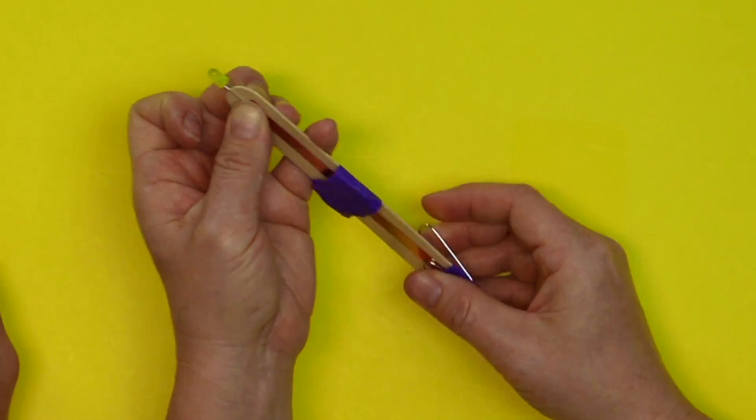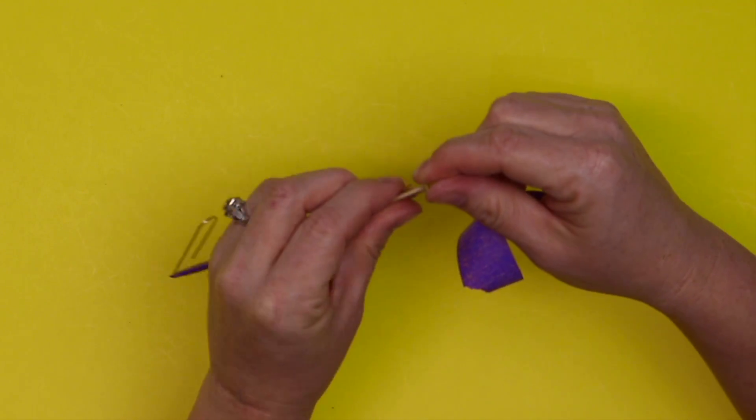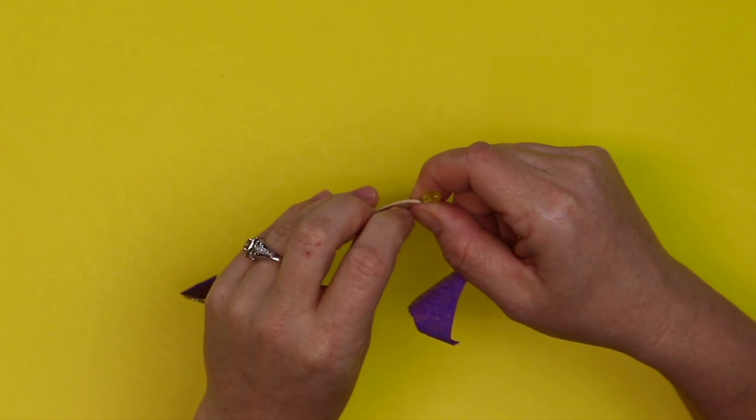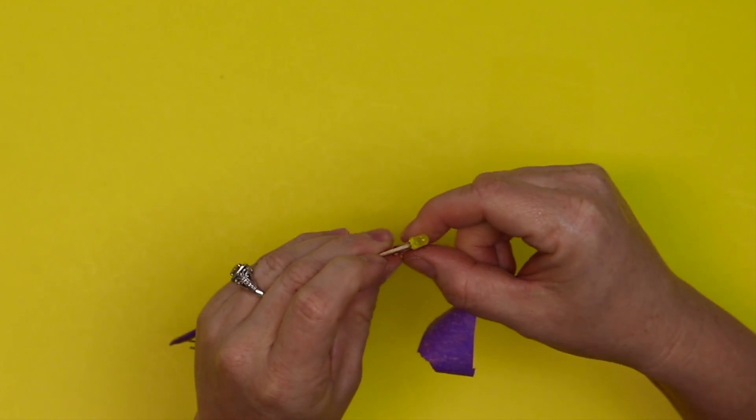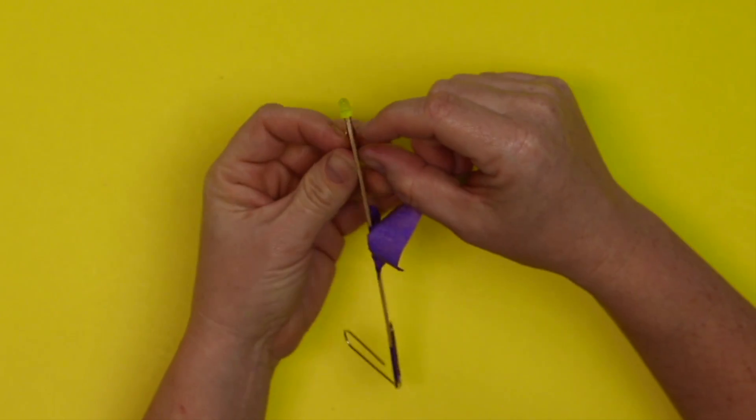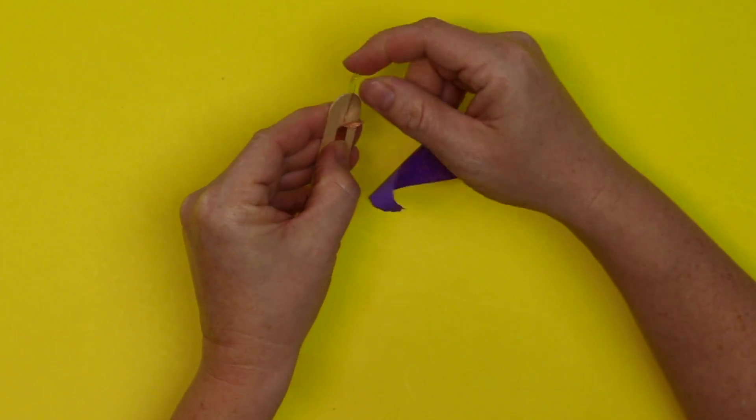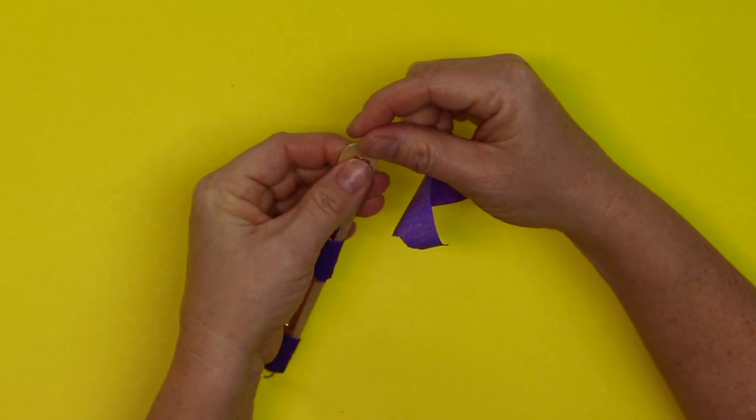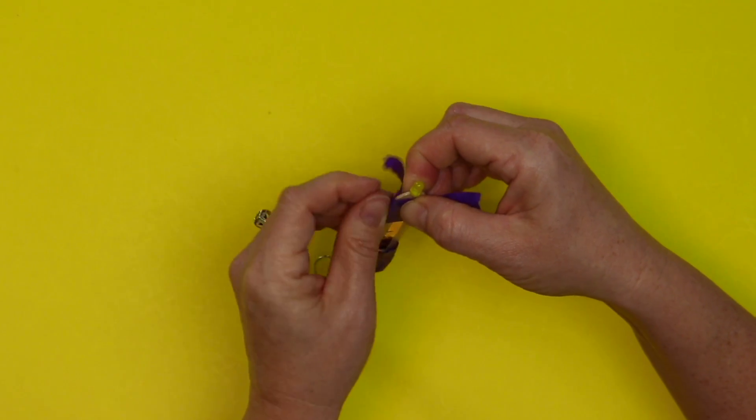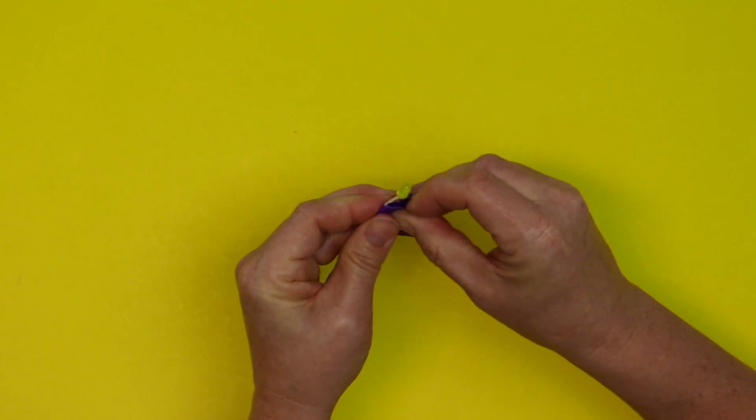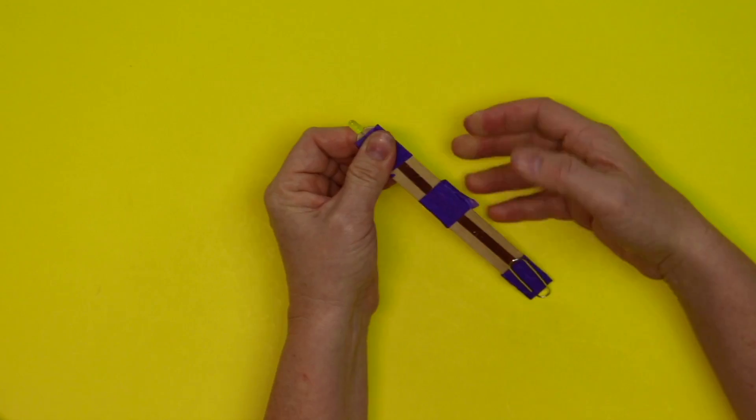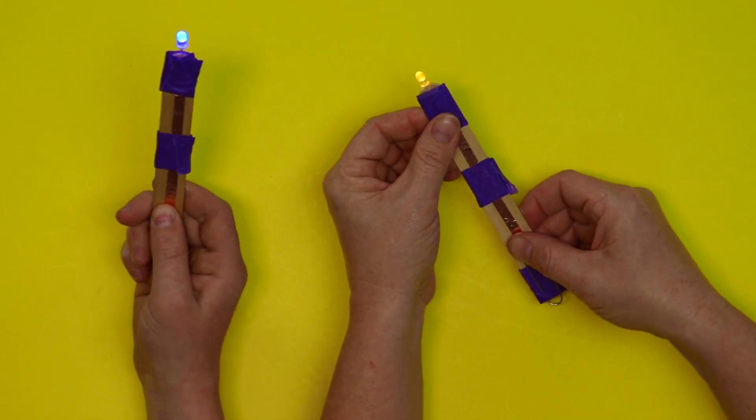So once you know that that is the side that works, you're going to tape it into place. But before you tape it into place, make sure that you have really good contact with the copper tape on both sides. Because that is key to making this work. Good contact. I'm going to wrap it around nice and tight. Really, really tight. You want it pressed on so tight. And now it turns on.